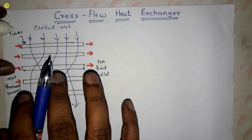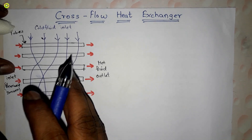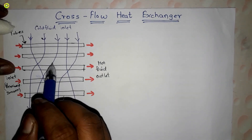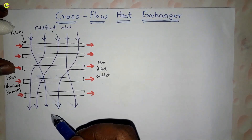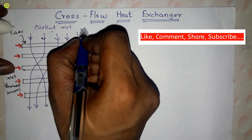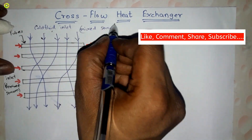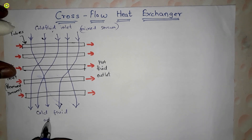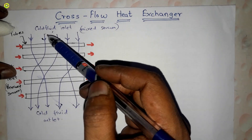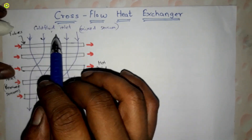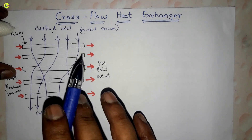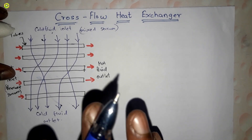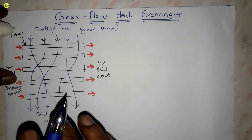This cold fluid is not passing in separate tubes, and there are no baffles to keep the streams separate. That is why this stream mixes inside the heat exchanger while flowing from inlet to outlet — making it a mixed stream. This is the cold fluid inlet and cold fluid outlet. Since the cold fluid is not in tubes, it mixes inside, which is why this is a mixed stream heat exchanger.